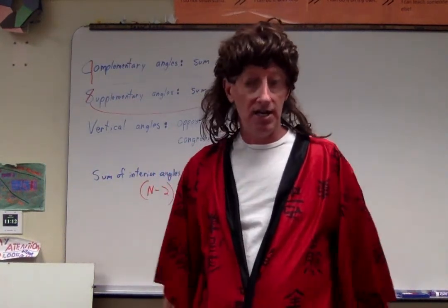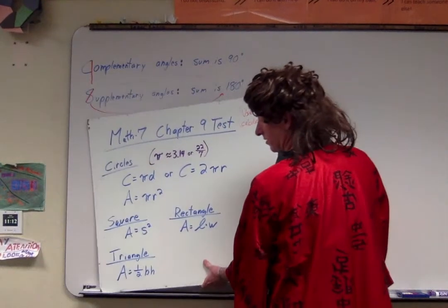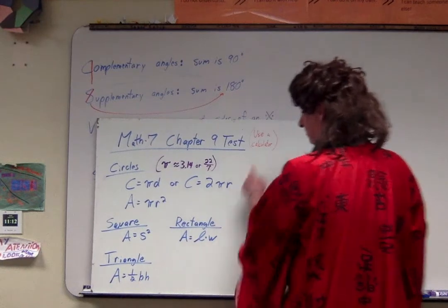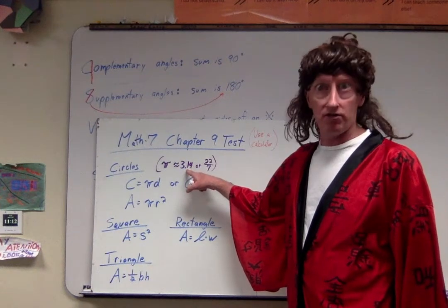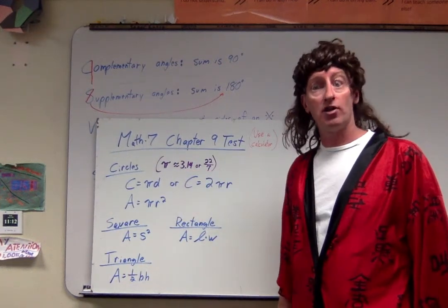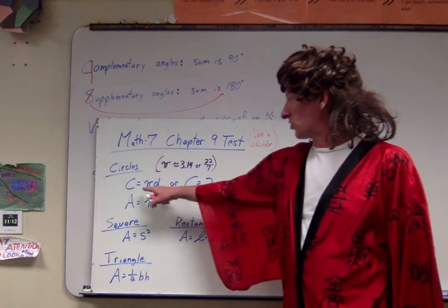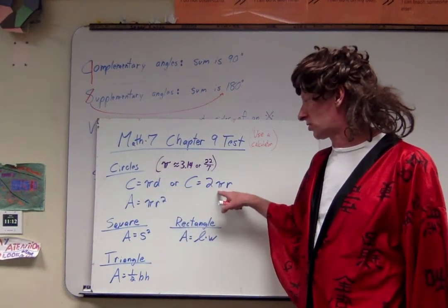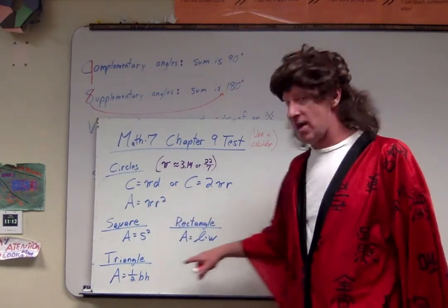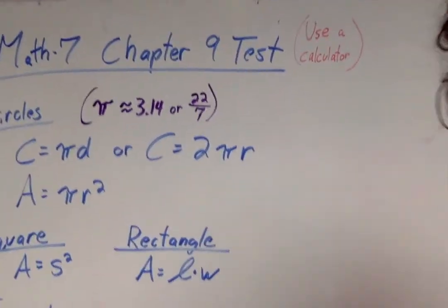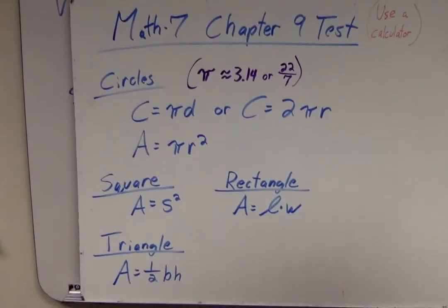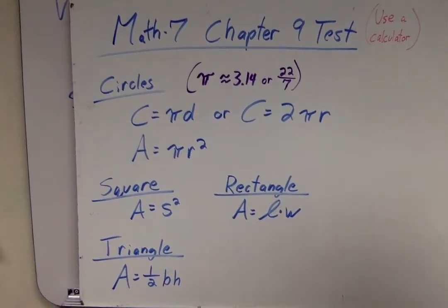That's all I've got for you today everybody. You've got some questions coming your way — here's your little cheat sheet formula sheet. Please don't forget to use your calculator. Pi is approximately 3.14 — sometimes written as 22/7, though I don't think you'll need that today. Formulas you'll need: circumference of a circle, area of a circle, area of a square, area of a rectangle, area of a triangle. Let's zoom in on that — good luck everybody, you can do it! See y'all tomorrow.